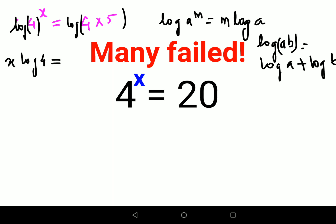So instead of log of 4 into 5, I can write this as log 4 plus log 5. Now in order to find the value of x, you will divide both sides by log 4.